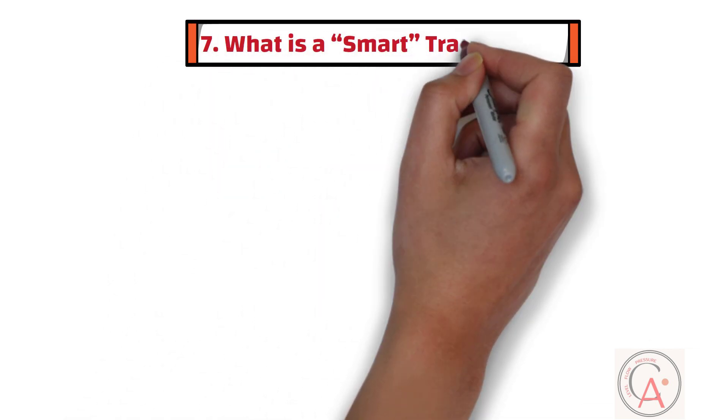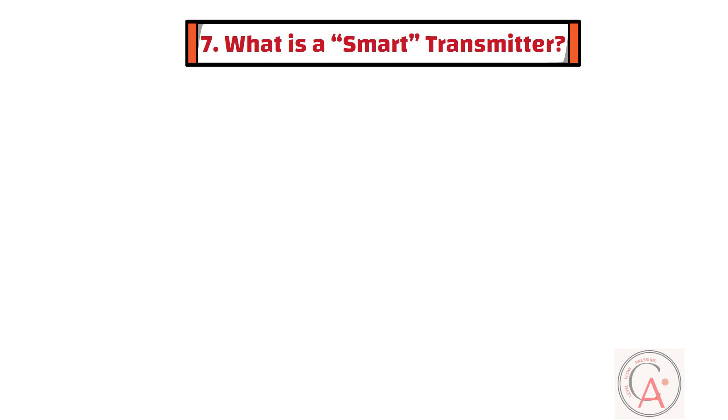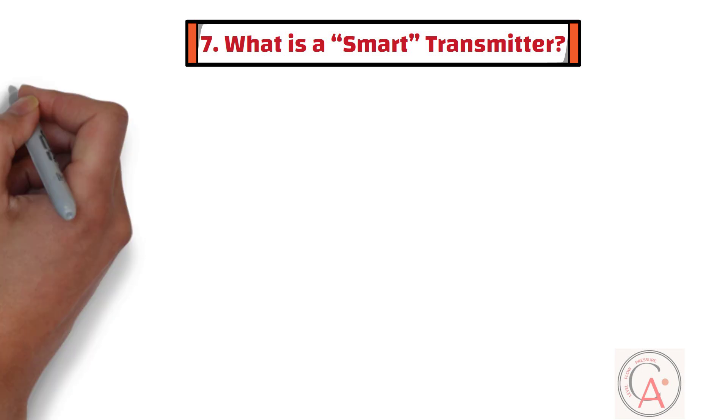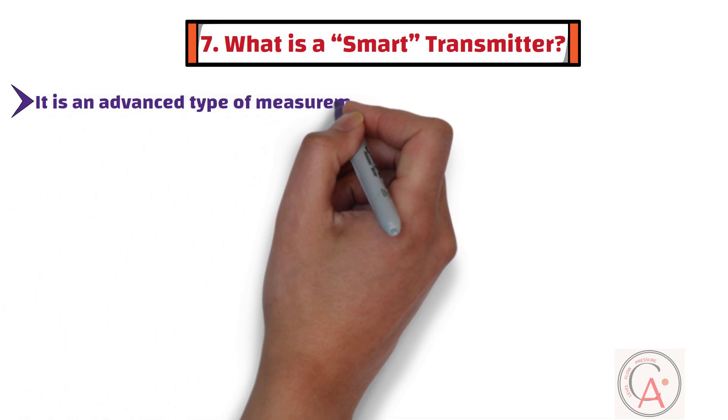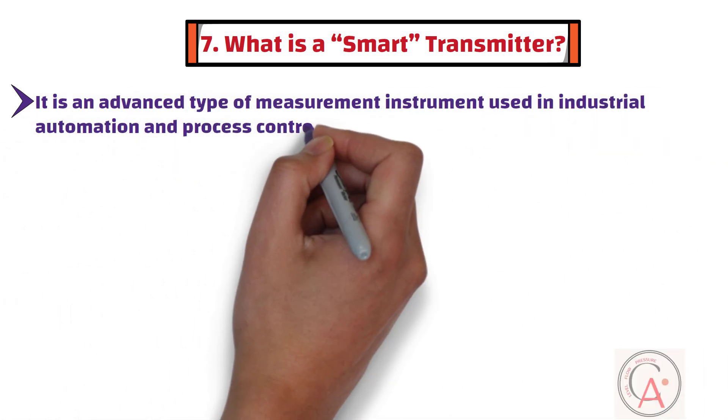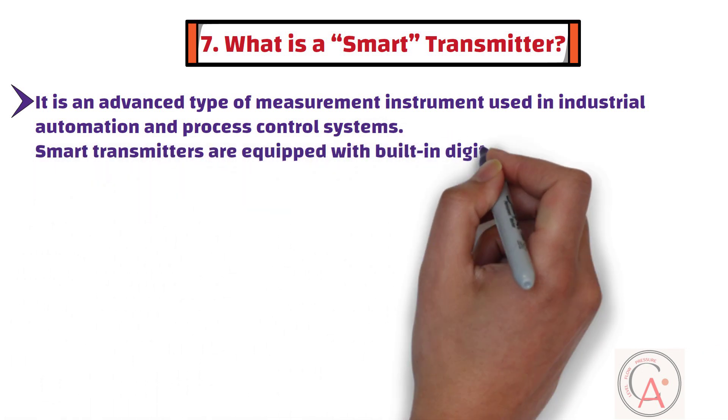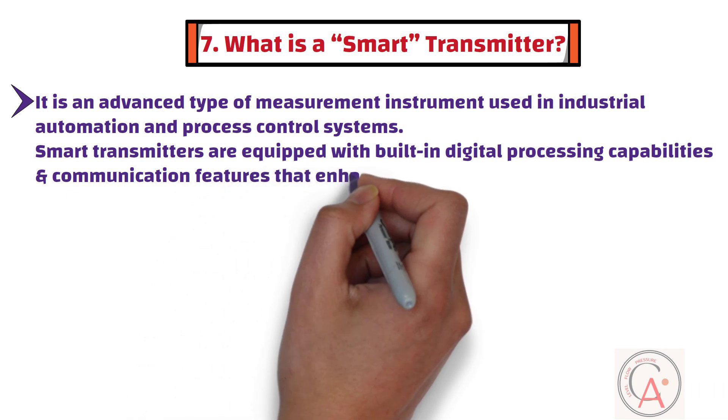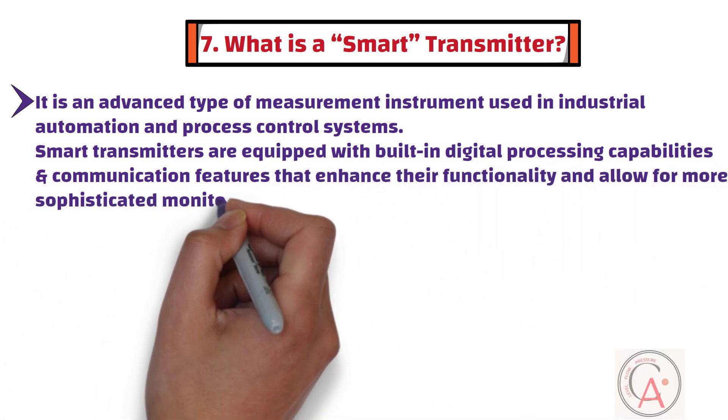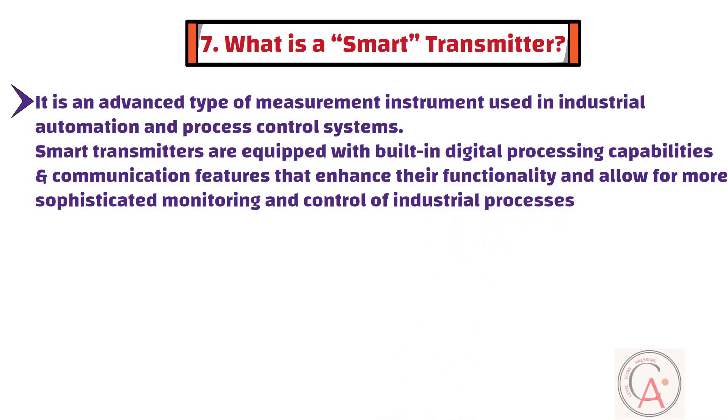The seventh question is, what is a smart transmitter? A smart transmitter, also known as an intelligent transmitter, is an advanced type of measurement instrument used in industrial automation and process control systems. Unlike traditional analog transmitters, smart transmitters are equipped with built-in digital processing capabilities and communication features that enhance their functionality and allow for more sophisticated monitoring and control of industrial processes.